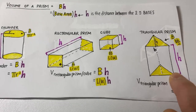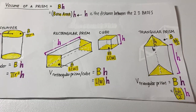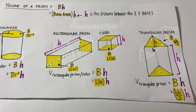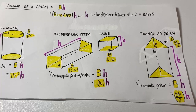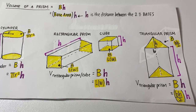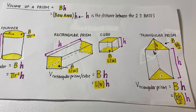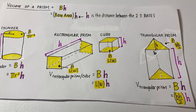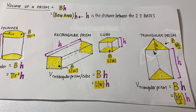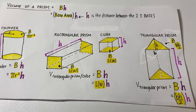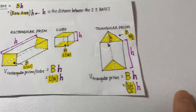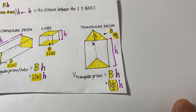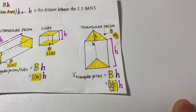Volume, volume, volume. Volume of a rectangular prism: length times width times height.